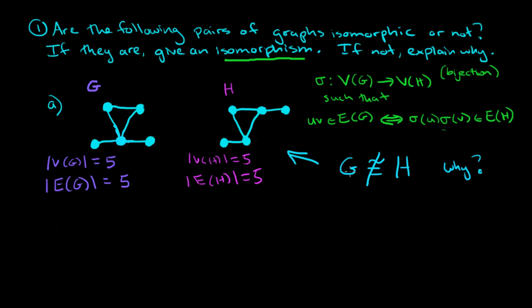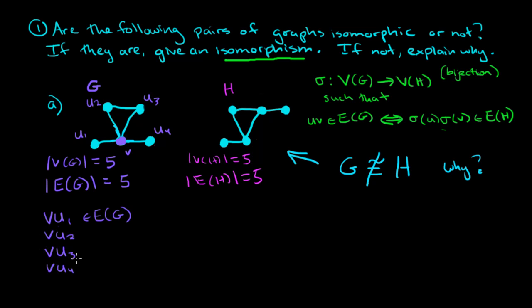Why is that? Well, if we were going to try to map the vertices of G to the vertices of H, I want to point out a special vertex — let's call it v. It has some neighbors in graph G, and I'm going to call them u1, u2, u3, and u4. So we know that vu1, vu2, vu3, and vu4 are all edges in graph G, contained in the edge set E(G).